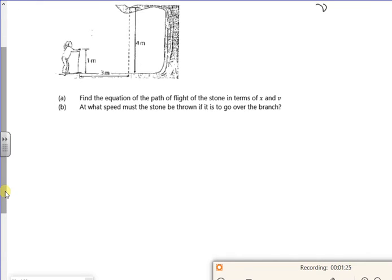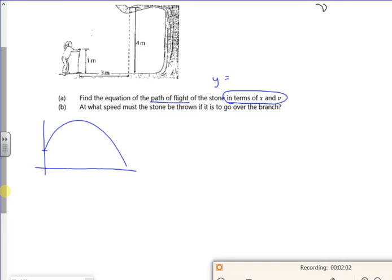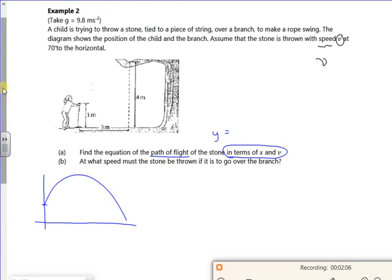Now it says that it wants an equation of the flight path. If you look here, it says in terms of X and V. So really, I want a Y equals. What I want in terms of a plan will be an equation for S vertically and an equation for S horizontally, and rearrange one for time and sub it into it, just like the last example. In terms of a picture, it's one metre high, and we've got 70 degrees to the horizontal.